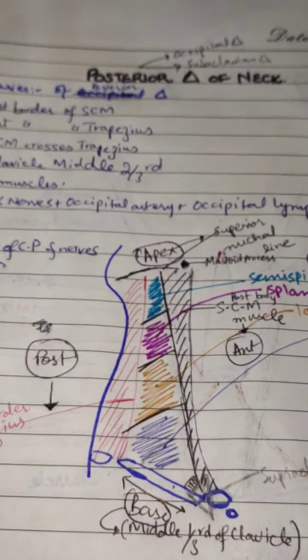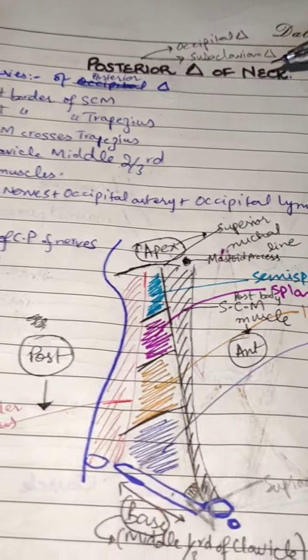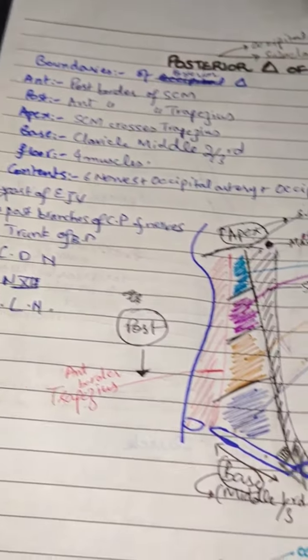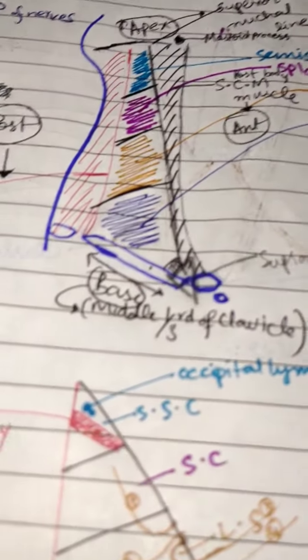Now we will learn the posterior triangle of neck. We will learn the boundaries of the posterior triangle of neck. This is our posterior triangle of neck.